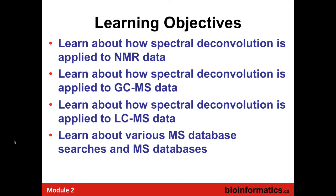Every slide set begins with our learning objectives. We're going to look at the three main technologies: NMR, GCMS, and LCMS. In all cases, we're going to look at what I call spectral deconvolution. You have this complex collection of peaks, some of which are overlapping, separated by time, retention time, retention index, or chemical shift. We'll show you the principles of deconvolution, how individual compounds are identified and quantified for each technology, and close off with different types of mass spectral database searches and NMR databases as well.